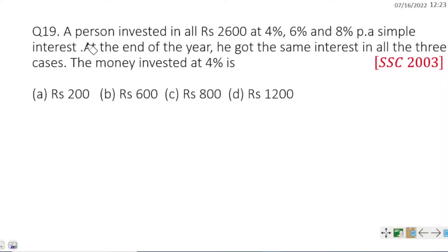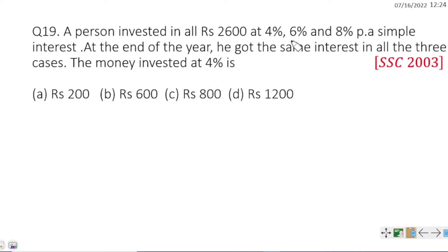A person invested Rs. 2600 at 4%, 6%, and 8% per annum simple interest. At the end of the year, he got the same interest in all 3 cases. Find the money invested at 4%.